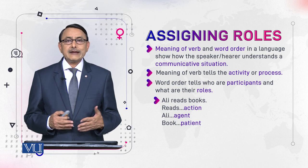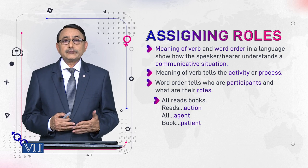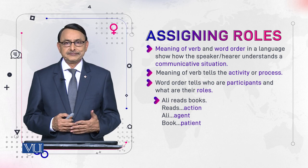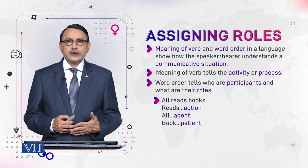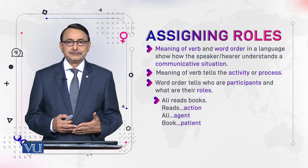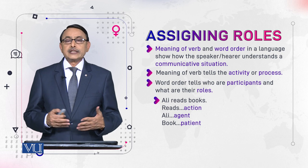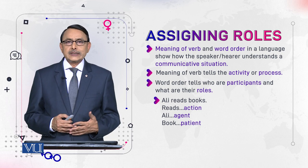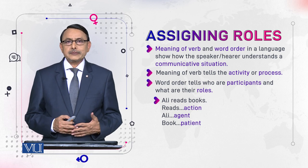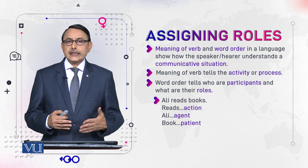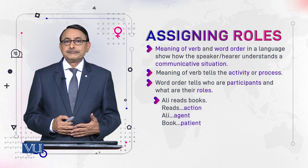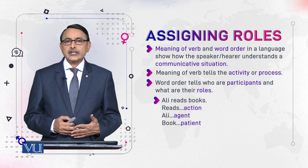For example, we have the verb 'hit.' This verb demands two participants for completion of the hitting action it represents — one who hits something, and second, something which is to be hit. For example, 'Ali reads books': here 'reads' is the action, the meaning of the verb. Ali is the agent — Ali is the reader — and 'book' is the patient; it is something read.